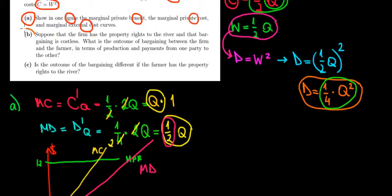Let's solve Part B now. Suppose that the firm has the property rights to the river and that bargaining is costless. What's the outcome of that bargaining and what are going to be the payments from one party to the other?